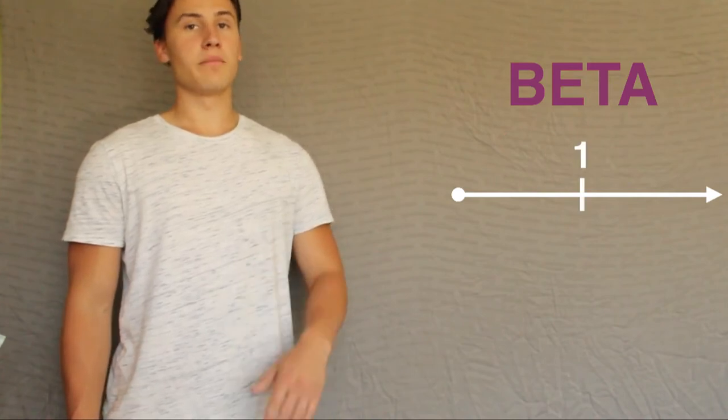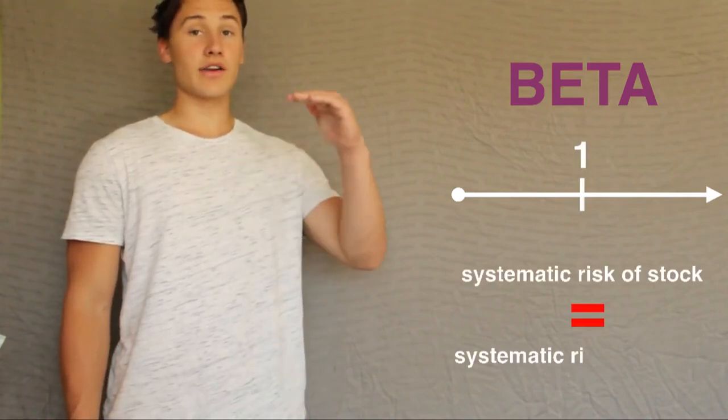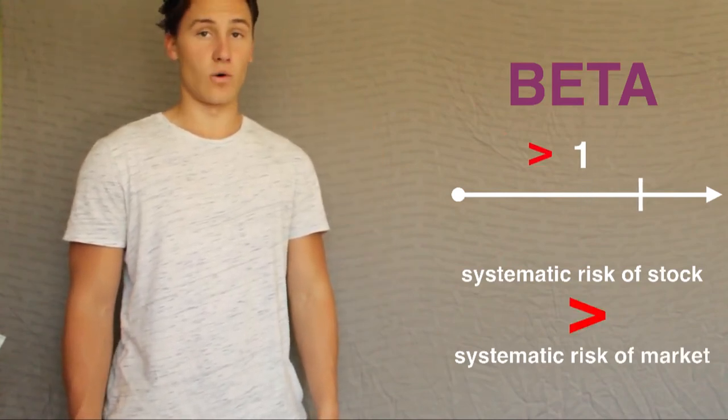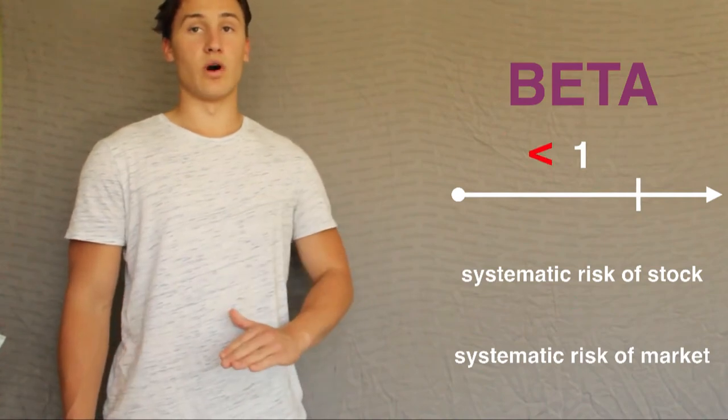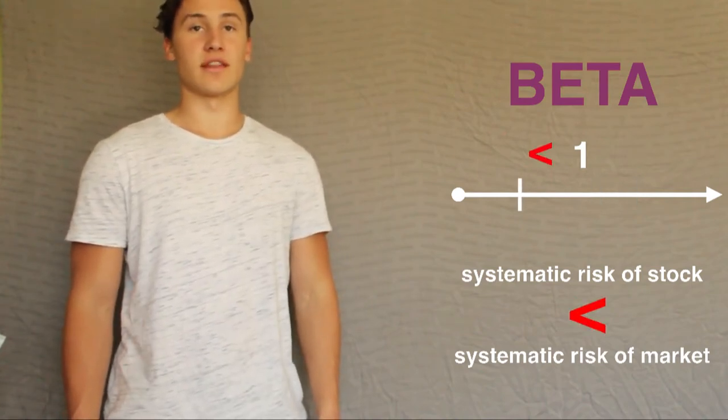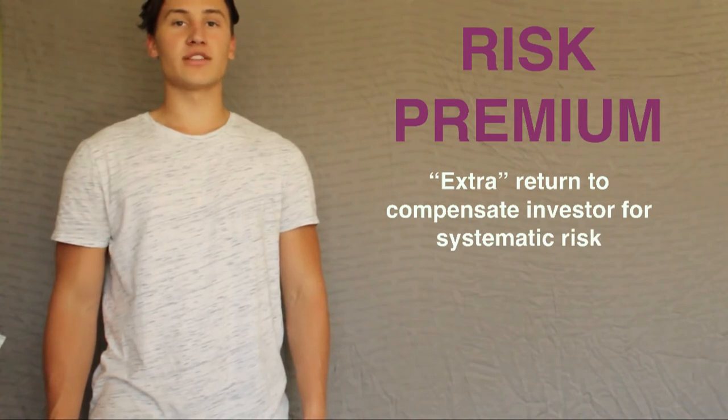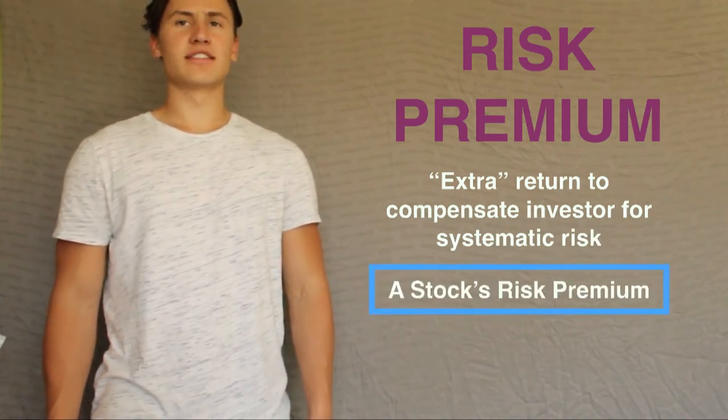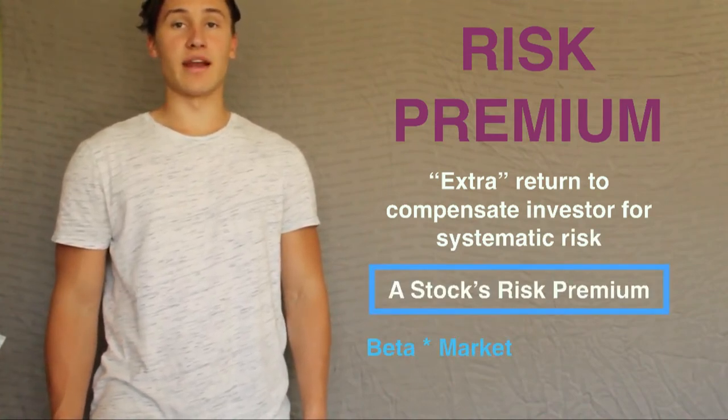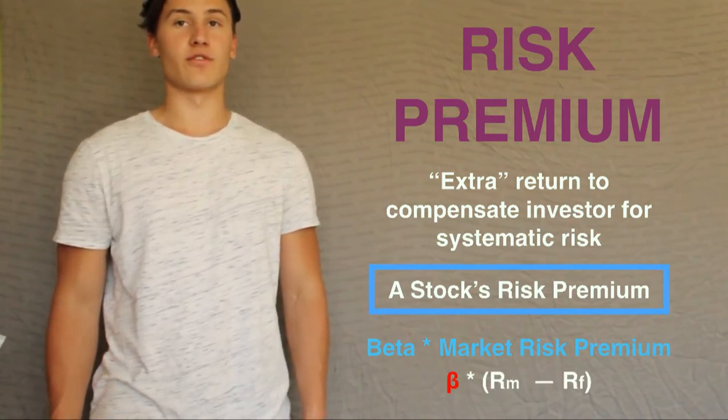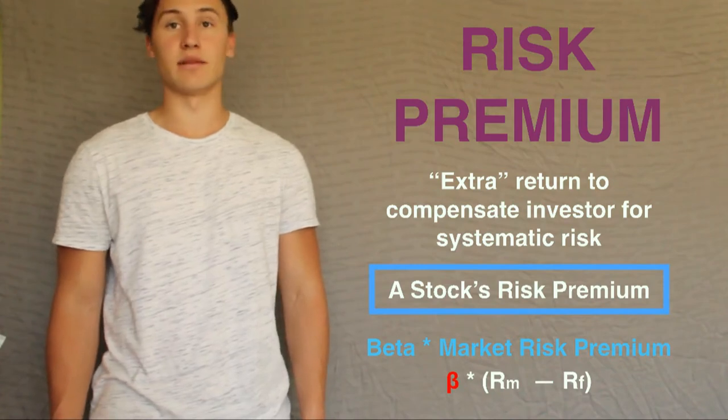A beta of 1 means that the price of a security is as risky as the market. A beta higher than 1 means that the asset experiences more variation in its returns than the market as a whole. And a beta lower than 1 means that the asset has less variation in returns than the market. An asset's risk premium, how much an asset rewards an investor for enduring the risk of the asset, should be proportionate to its systematic risk. The systematic risk of an asset is its beta times the market's risk premium, which is how much the market portfolio rewards investors for holding onto the risky assets in the market portfolio.